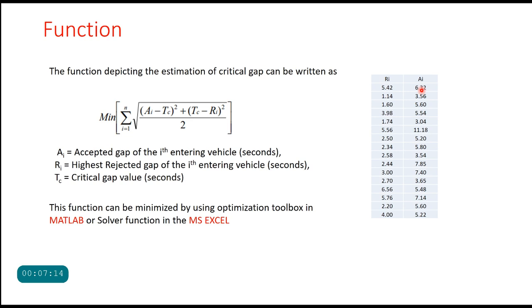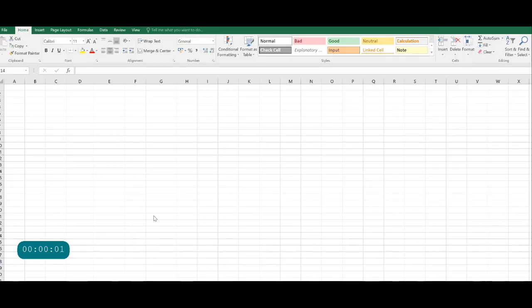I will explain how the function solver can be used in MS Excel to get the value of critical gap. To use solver function in Excel sheet, open MS Excel and here you can write Ri for rejected gaps, Ai for accepted gap, and then root mean square function.